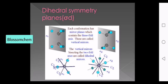This is dihedral symmetry. If we use the diagonal axis, it bisects the angle between C2 axes — this is perpendicular to the principal axis. Each conformation has mirror planes containing the threefold axis, called vertical mirror planes. The vertical mirror bisecting the twofold axis is the dihedral mirror plane, sigma d.